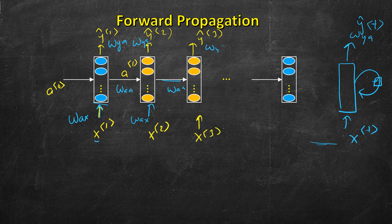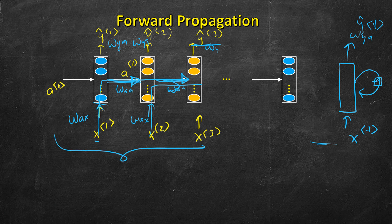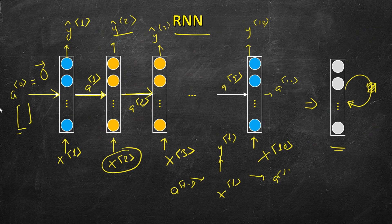For making a prediction of y-hat 3, we are using input from previous time steps. So x1 is passed forward, then x2 as well — it uses information from previous time steps but not from future time steps.